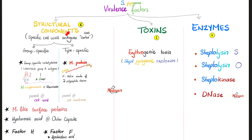Structural components are part of the cell wall, cell membrane, or capsule. We divide them into group-specific and type-specific — does this component appear in the entire group or just in one type? Group-specific carbohydrates are found in all group A bacteria: it's Lancefield group A, a dimer made of N-acetylglucosamine and rhamnose found in the cell wall.